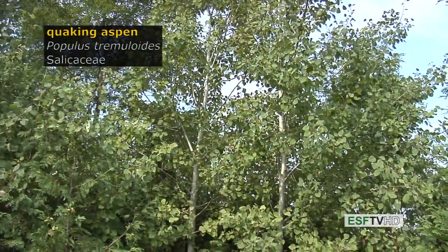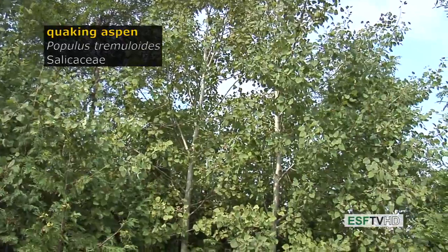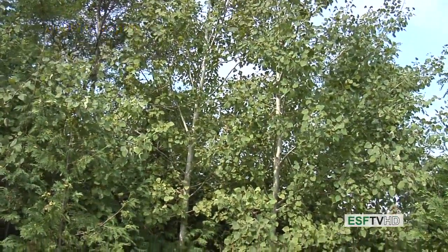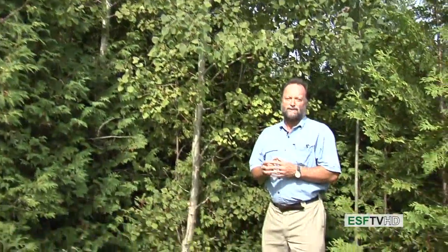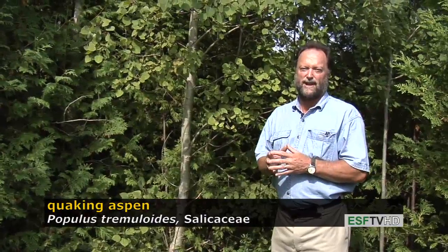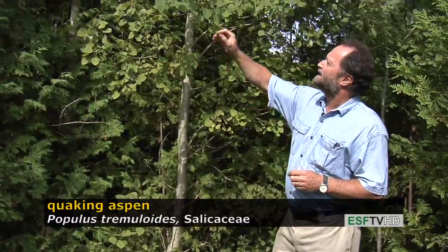The most widely distributed tree in all of North America, occurring from sea level to 11,000 feet — quaking aspen, or trembling aspen, Populus tremuloides, in the Salicaceae or willow family. It's a remarkable tree in its ability to colonize drastically disturbed landscapes, especially those with very little fertility and moisture.